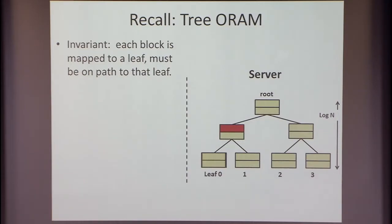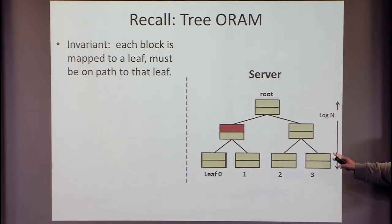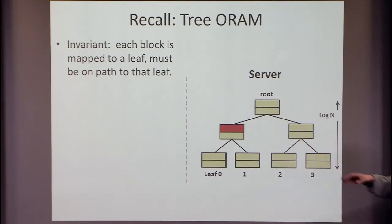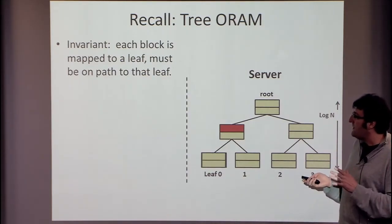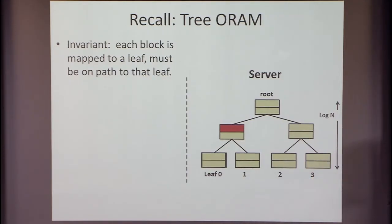If you remember the picture of tree ORAM or path ORAM — I'm drawing the tree the other way now — the main invariant is that we have data blocks residing in a tree. Each block is mapped to a particular leaf, and each block must be on the path from the root to that leaf. It'll be useful to separate the data structure into two components: the data (the actual block values in buckets in the tree) and the metadata.